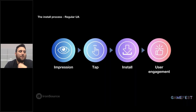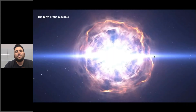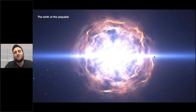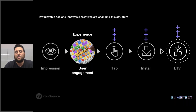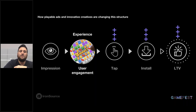I want to talk about something really big that happened in the past two years. Up until about two years ago, the regular UA funnel was: impression, click, install, then measure user engagement. But about two years ago came the rebirth of playable ads. The interactive formats that were known in the web for a long time came back to mobile games, and it really changed the whole industry. What actually happened is that user engagement got pushed up the funnel — within the ad itself, you see the user engagement and the game experience happen within the ad. This really changed the matrix down the funnel in terms of clicks, installs, and mainly the LTV of users being brought in, because they already got a taste of the game.